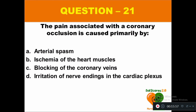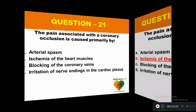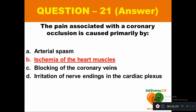Question 21: The pain associated with a coronary occlusion is caused primarily by: option A arterial spasm, option B ischemia of the heart muscles, option C blocking of the coronary veins, option D irritation of nerve endings in the cardiac plexus. The right answer is option B — ischemia of the heart muscles leads to pain, which is the result of coronary occlusion.